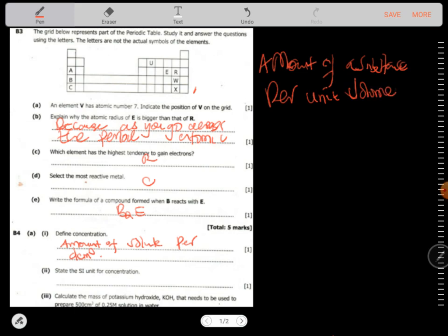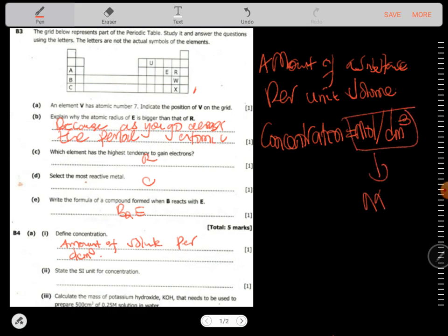Now state the SI unit for concentration. Concentration is measured in mole per decimeter cubed. This is also known as molarity, symbol M, but the answer is this: mole per decimeter cubed.